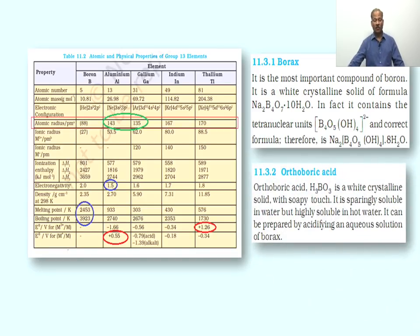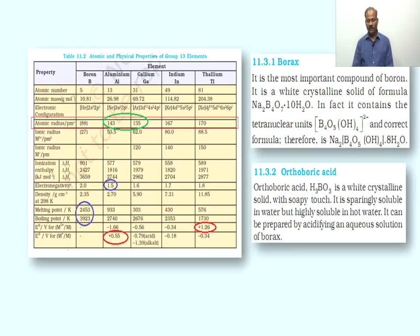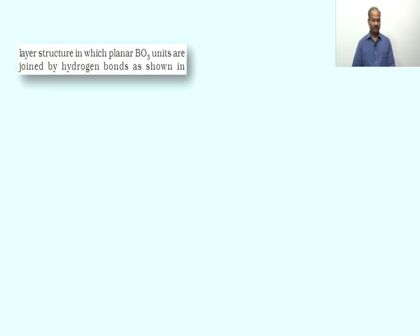Another important compound of Boron is orthoboric acid. Orthoboric acid is again a white crystalline solid having formula H₃BO₃. It has a soapy touch. It is sparingly soluble in cold water but highly soluble in hot water — similar to lead iodide and lead chloride which are insoluble in cold water but soluble in hot water. Boric acid can be prepared by acidifying an aqueous solution of borax.